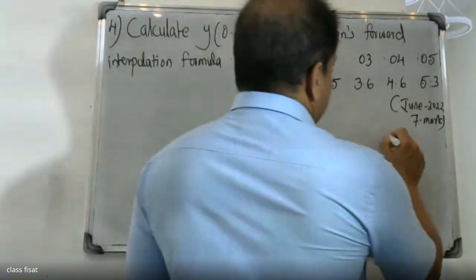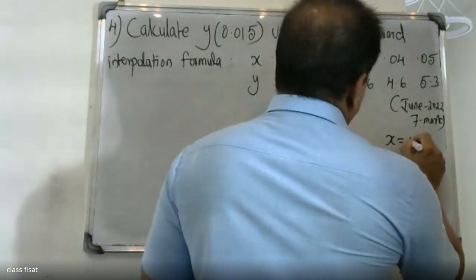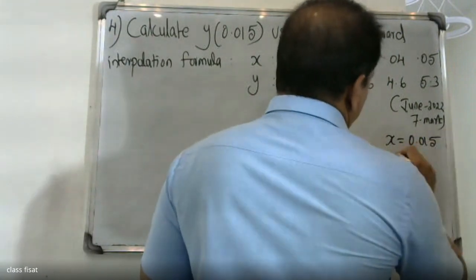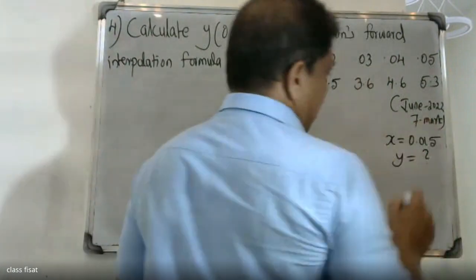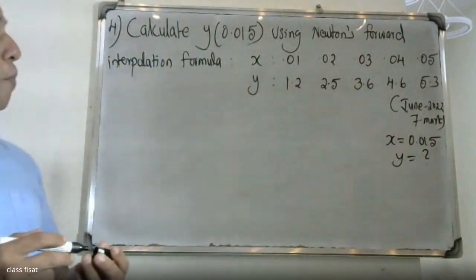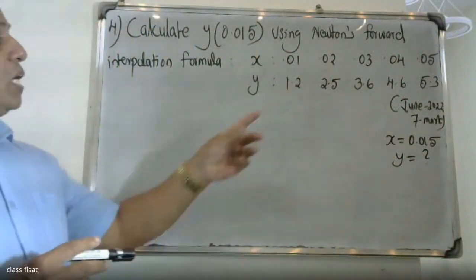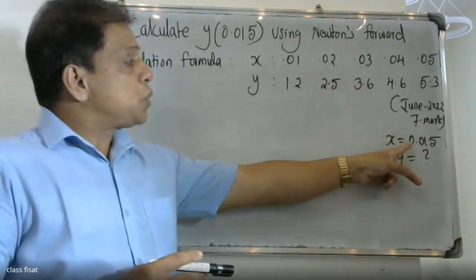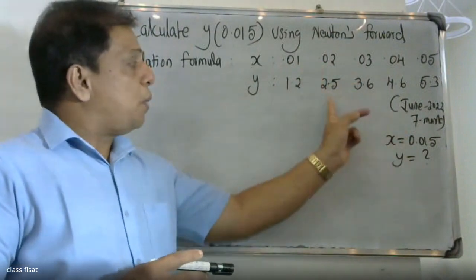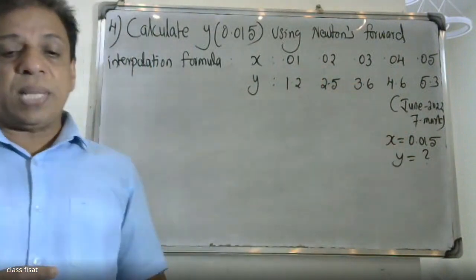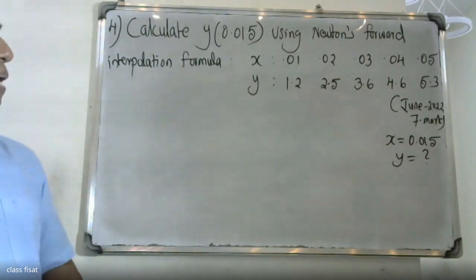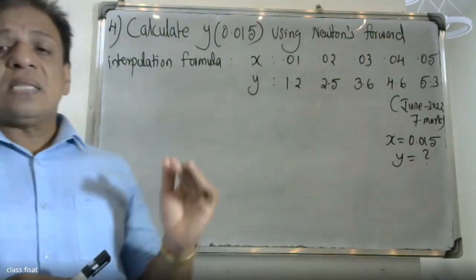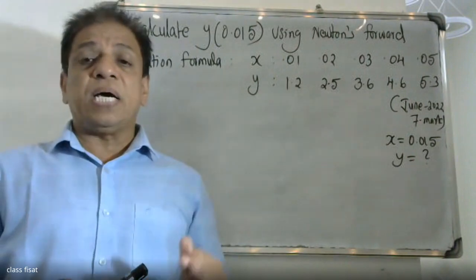We need to find y at x = 0.015. Since 0.015 lies between 0.01 and 0.02, we will use Newton's forward interpolation formula. We identify x naught = 0.01 and proceed to set up the calculation.